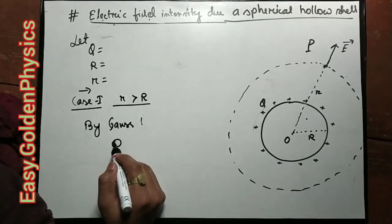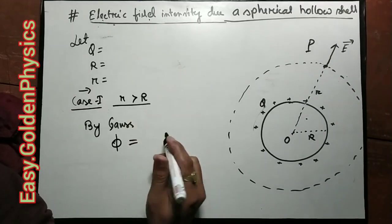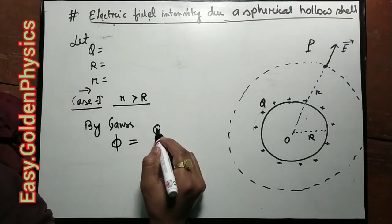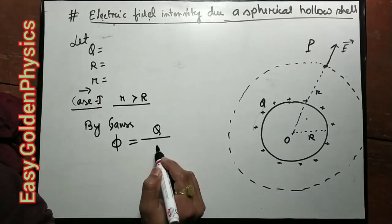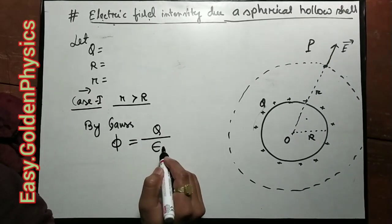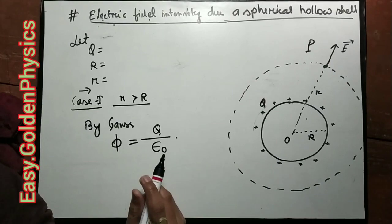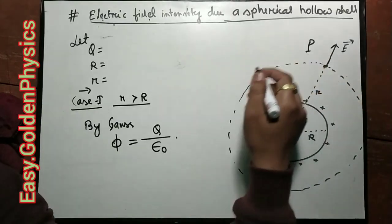If the electric flux phi equals Q divided by epsilon naught, the Gaussian surface encloses the total charge Q.